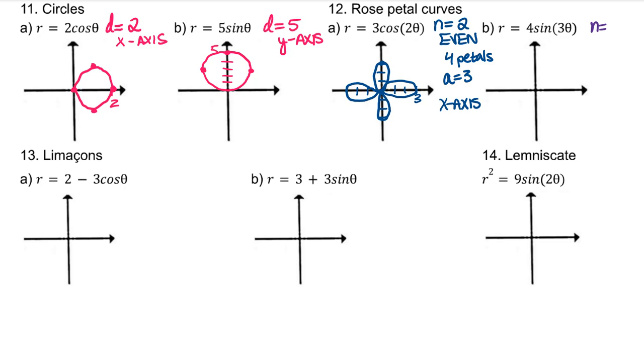Those 4 petals will be on the axis. For part B, n is 3, which makes it odd, so we're only going to have 3 petals. Our max radius is 4, and due to it being sine, we have y-axis symmetry. Or, to figure out which one, I'm going to plug in pi halves for theta. That would be asking me to find sine of 3 pi halves. Sine of 3 pi halves is negative 1, so negative 4. That means this is our curve.